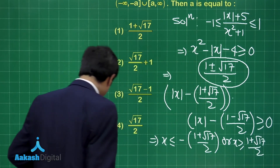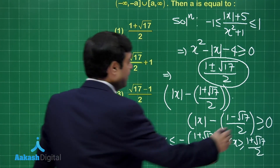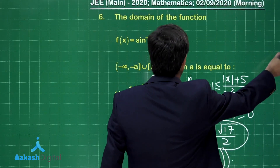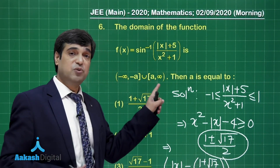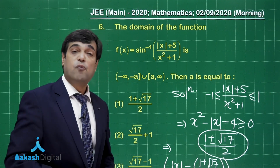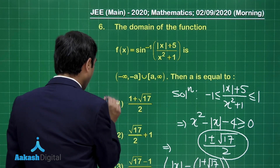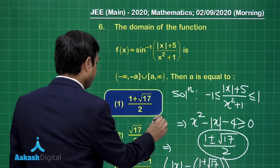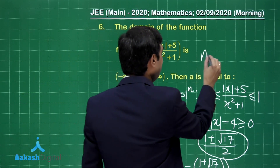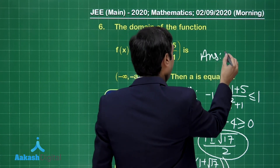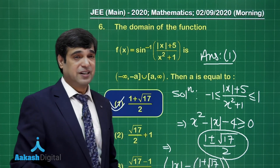The domain is (−∞, −a] ∪ [a, ∞) where a = (1+√17)/2. Checking the options, this matches option number 1. This question involved inverse trigonometric functions and inequality solving.